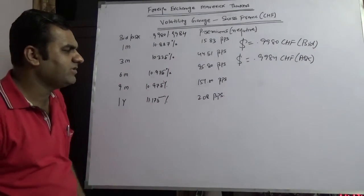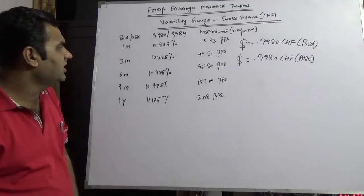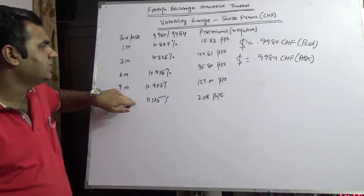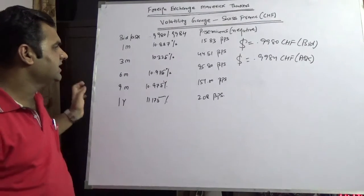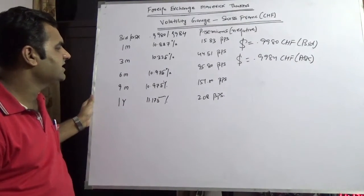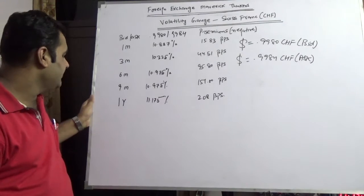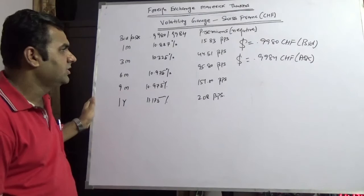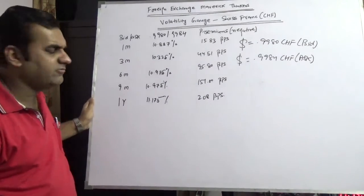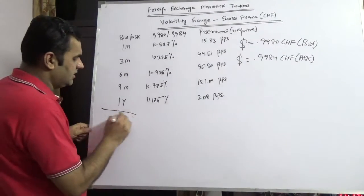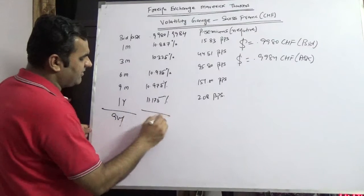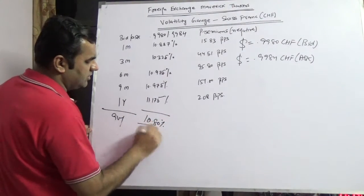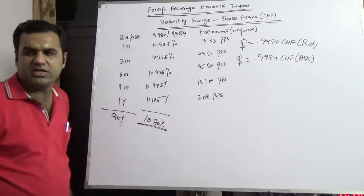Swiss franc over the period has faced a very different kind of stuff. First of all, these are the implied walls of Swiss franc: one month implied walls is 10.887, three month is 10.325, six months is 10.975, nine months is 10.975, and one year is 11.17. So certainly the Swiss franc implied walls, if I take the average, the rough average is approximately 10.80 percent. So the volatility level of Swiss franc is not low.